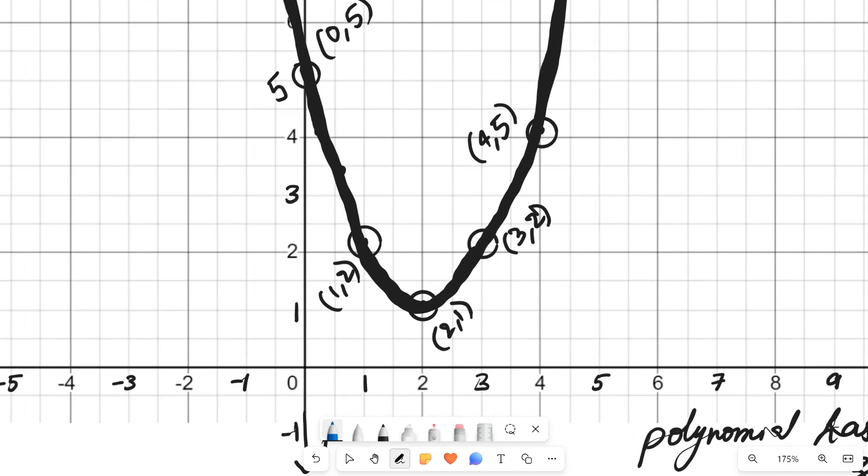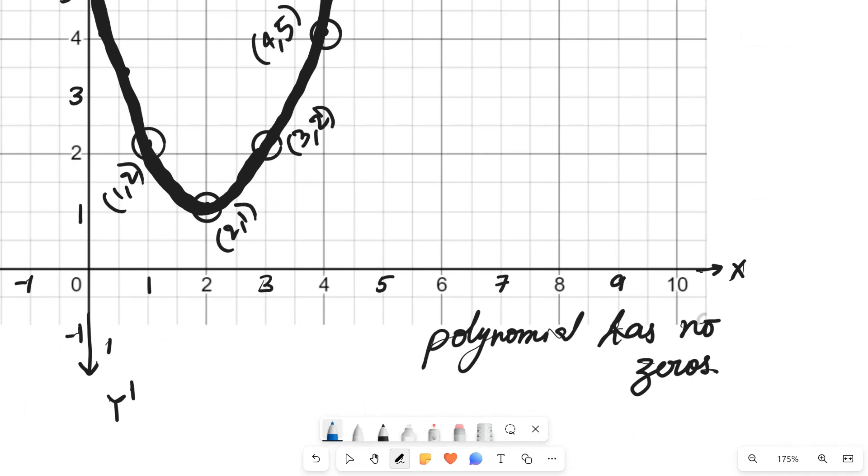In the first question we saw that number of times the graph intersects the x-axis equals the number of zeros, and the point where it is intersecting is the zero of the polynomial. Here we can see the polynomial isn't intersecting x-axis at all, so for any value of x the y value cannot be equal to zero. That is, there are no zeros for this polynomial.